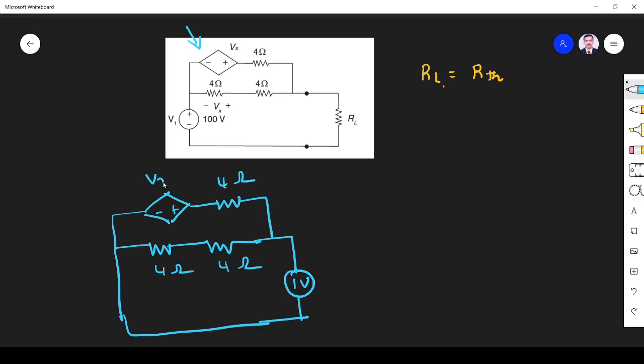This is Vx. Now let us assume current flowing out of this dependent source, in the independent source is I1. So this is I2. So this one is I1 minus I2.